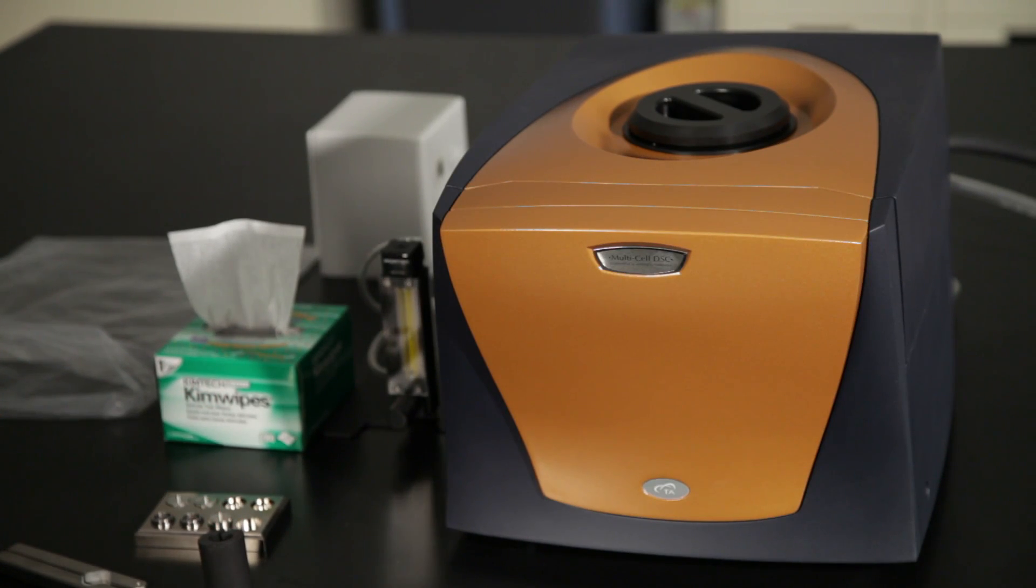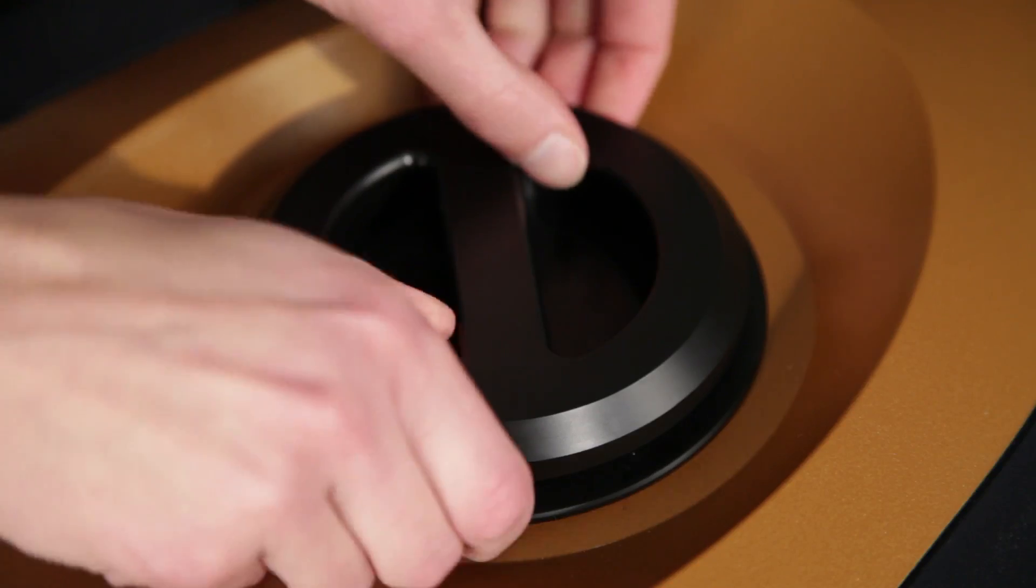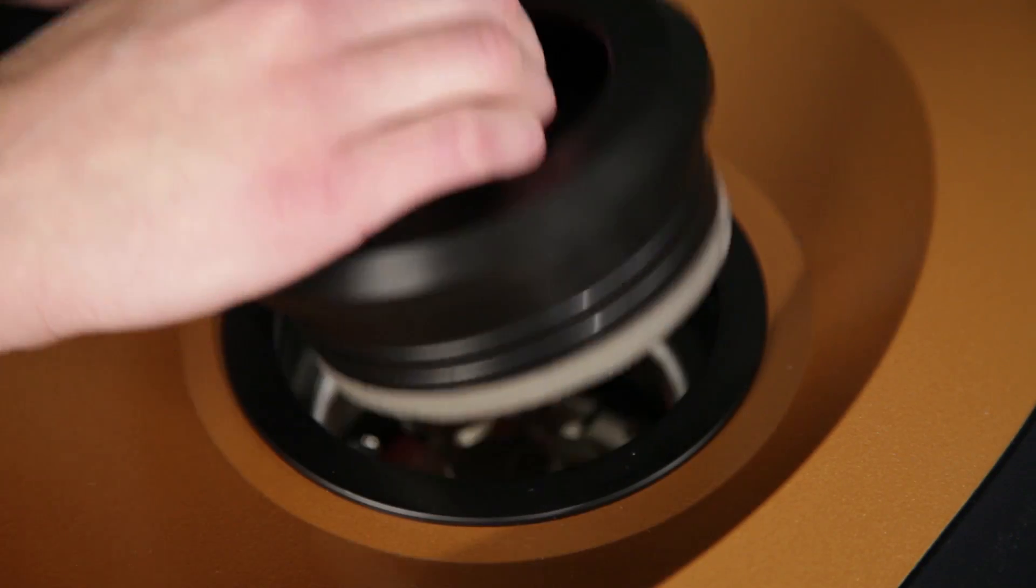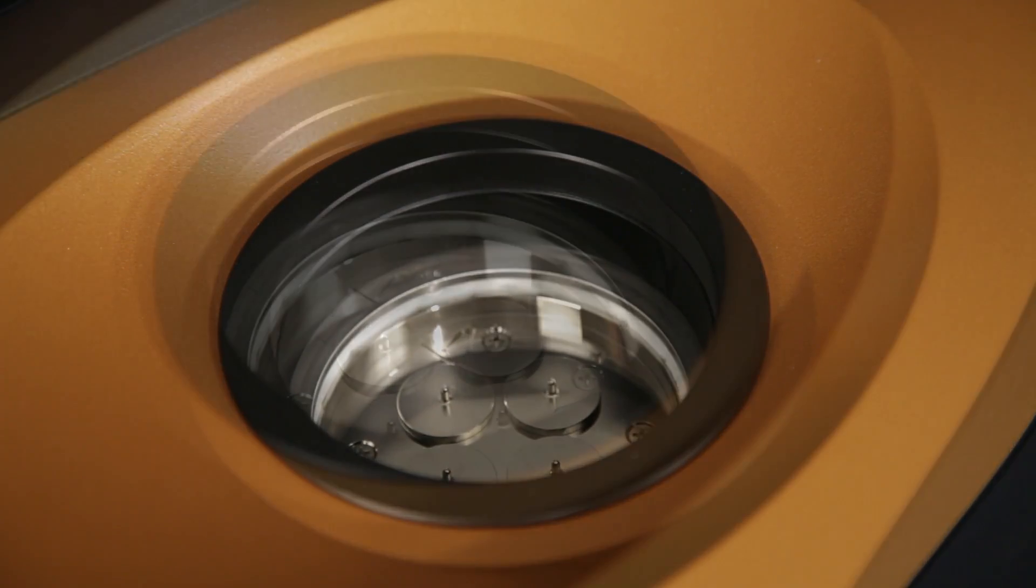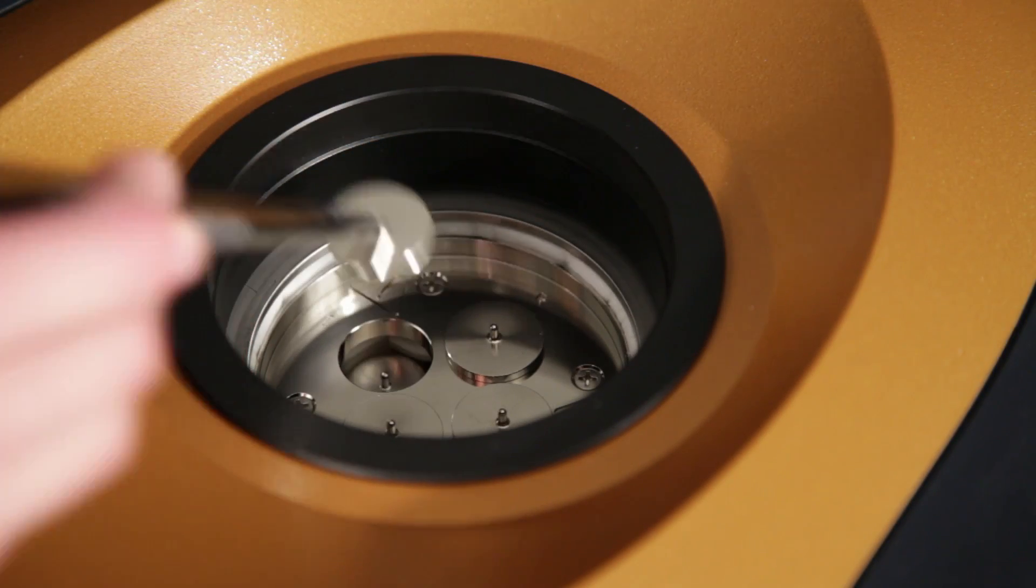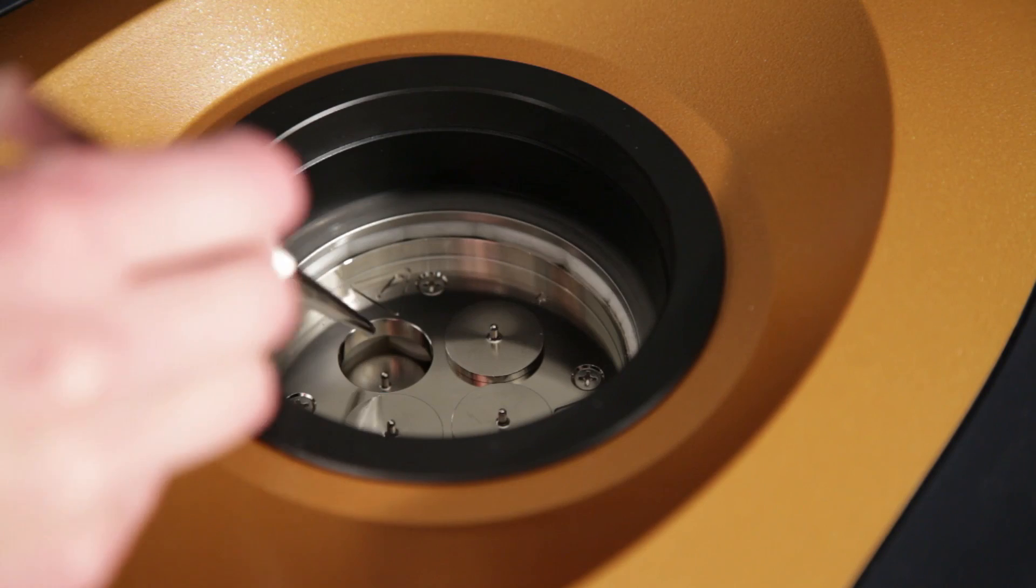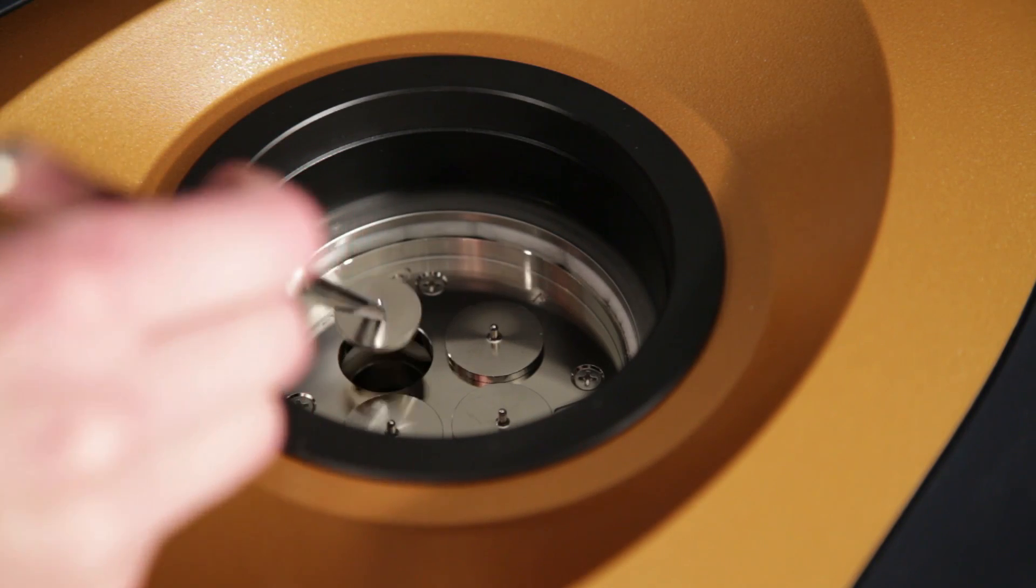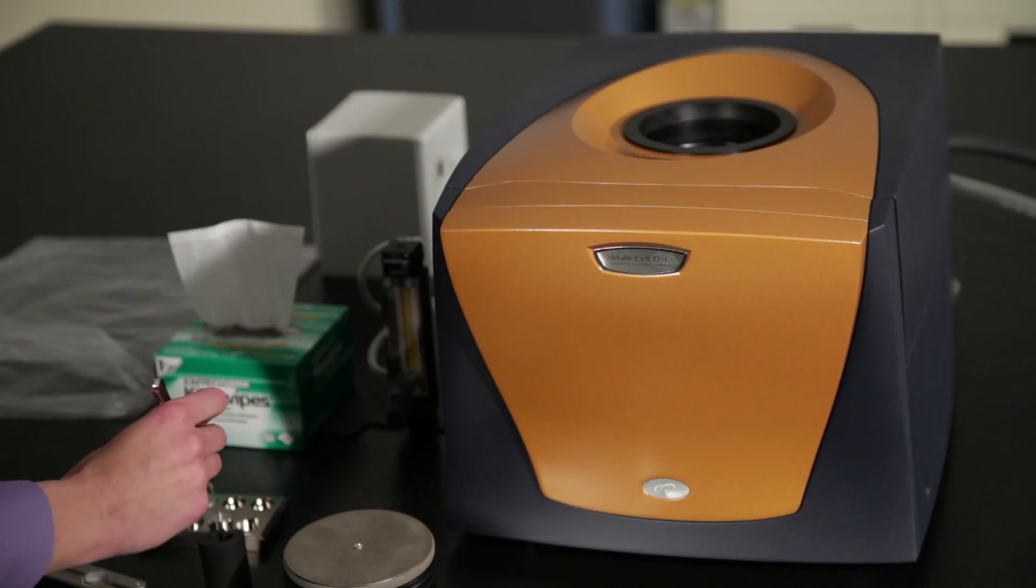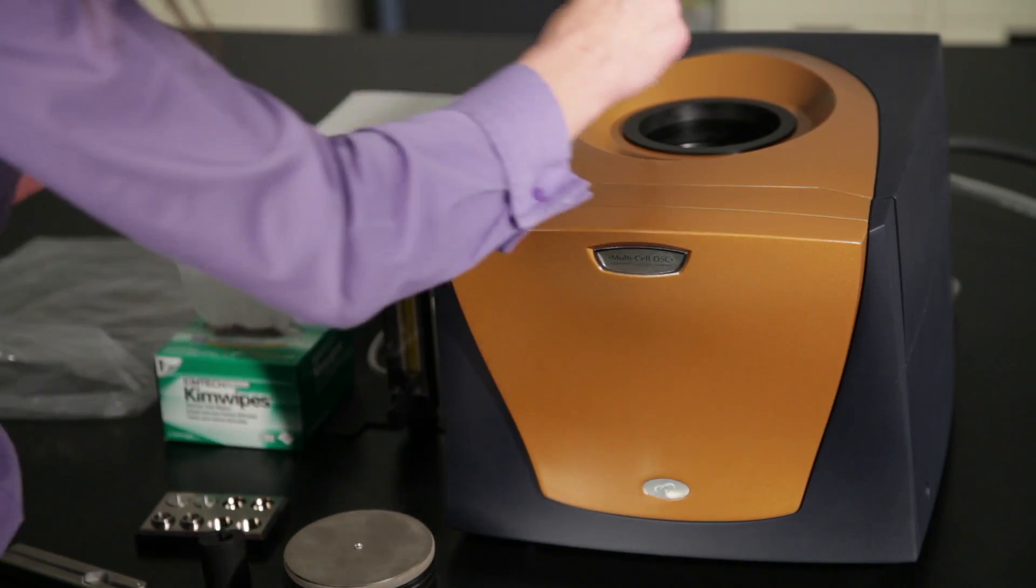Once an ampoule is closed and tightened, the lid on the top can be removed and it just pops out. It has two O-ring fittings. Then the outer shunt lid and the inner shunt lid are removed, and the ampoule is then placed into the instrument.